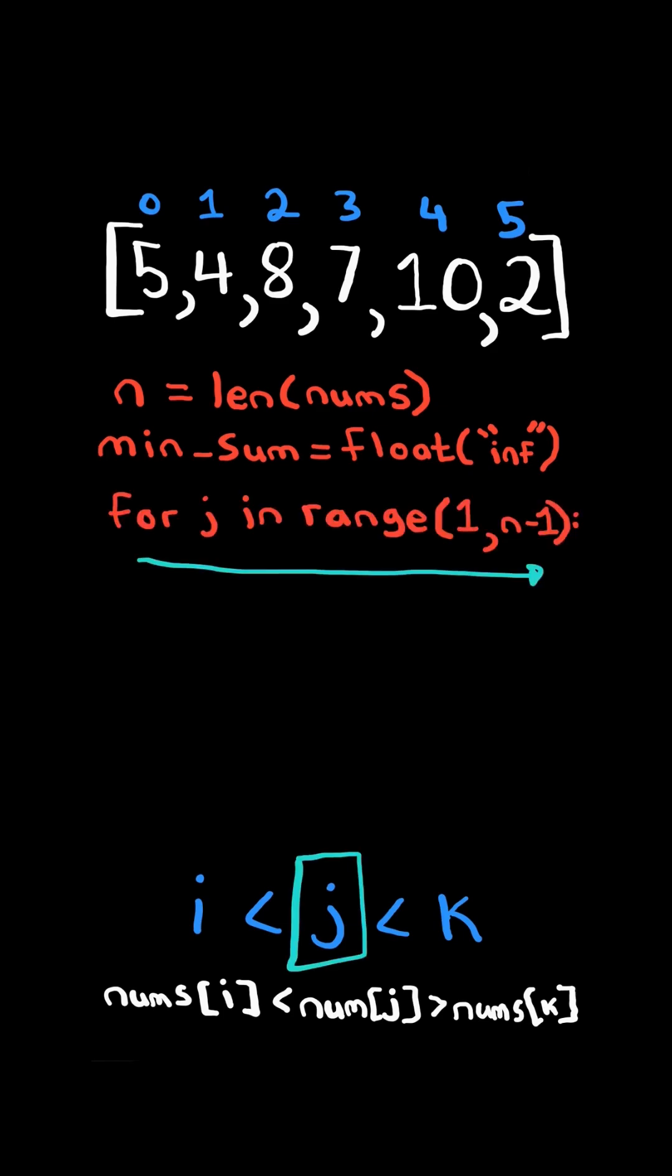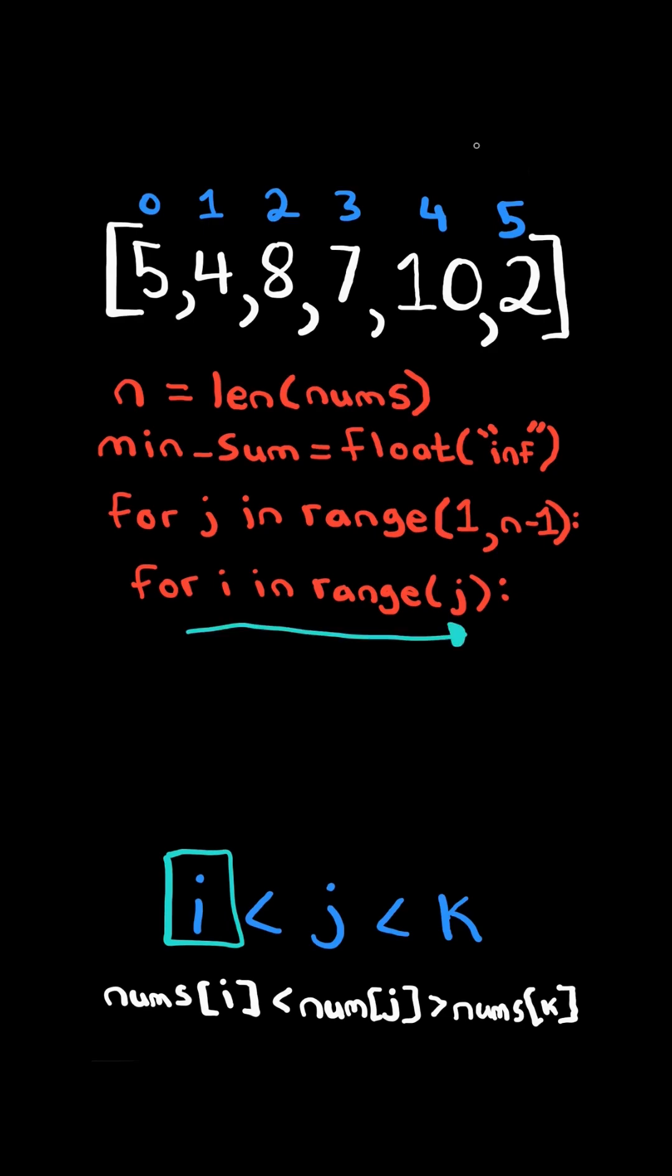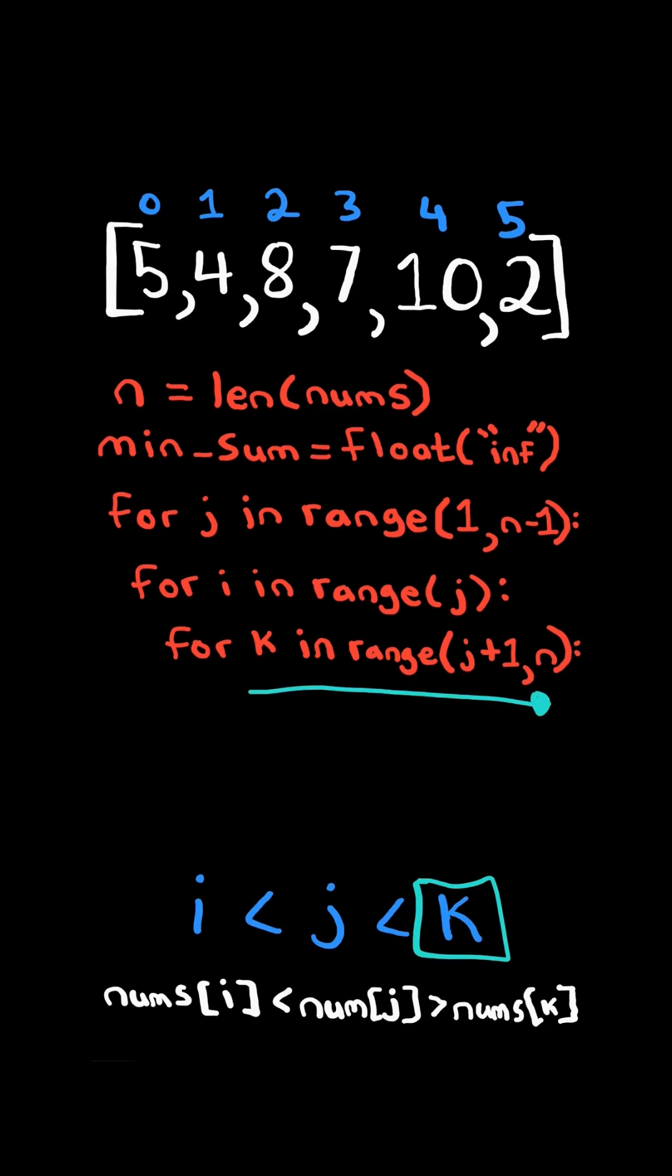We iterate from j to the length of the list and we know i must be before j, so i iterates up to j. And we know k must come after j, so k iterates after j up to n.